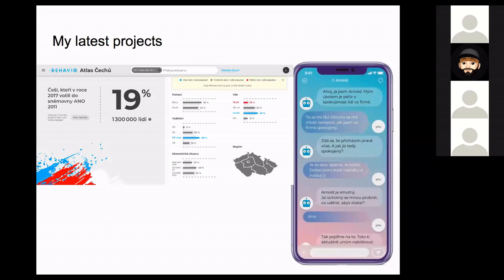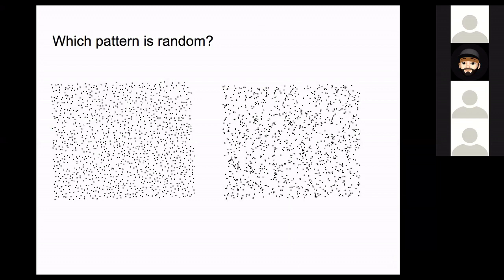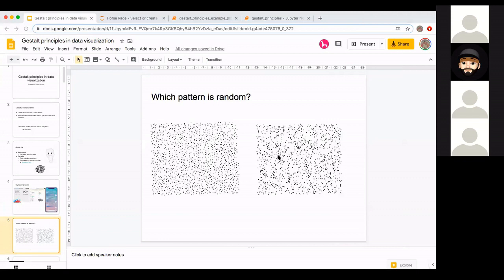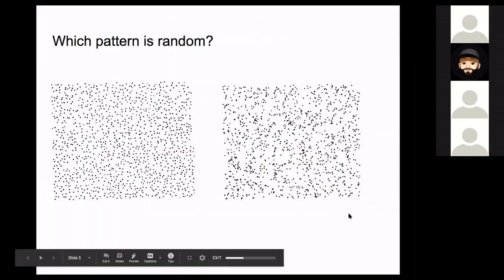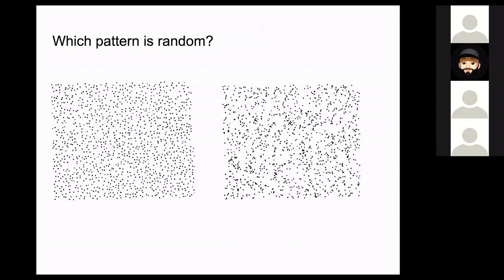Now let's do a poll. You have two patterns and you need to decide which pattern is random — the pattern on the left or the pattern on the right. Usually when I ask this offline, several people say it's the pattern on the left, but the right answer is the pattern on the right. If you look at the square on the left, you'll see there is some repulsion between particles — it's definitely not random. The pattern on the right has some structure, which as many of you know is quite natural for random data.